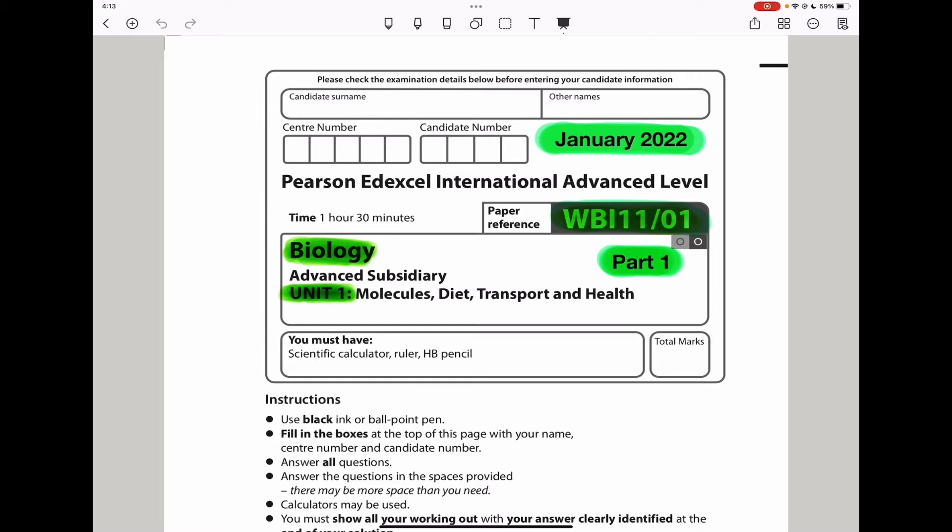Welcome to the Chemistry, Biology, and Math Revision Hub. Today we are doing the Pearson Edexcel International A-Level Biology Unit 1 for January 2022. I will do this paper in two videos. The part one video will contain questions one to four, and part two will contain questions five to eight. So let us begin.